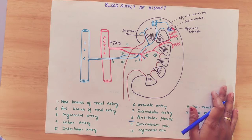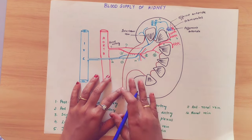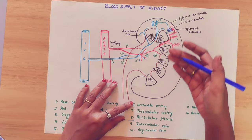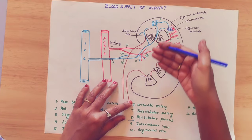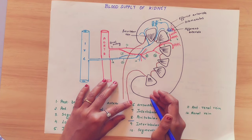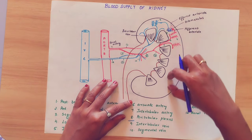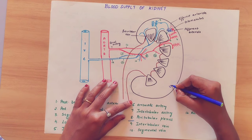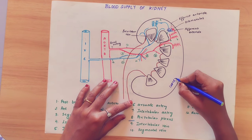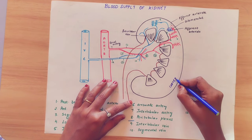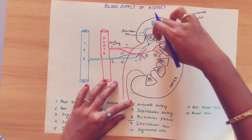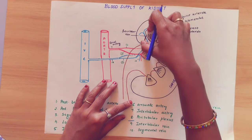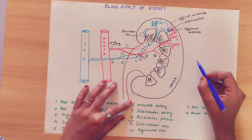Before knowing the blood supply of the kidney, you have to know the internal structure of the kidney. In the internal coronal section, this region is called the cortex, and this region is called the medulla.